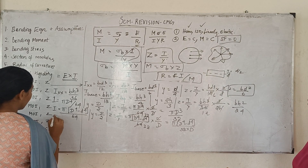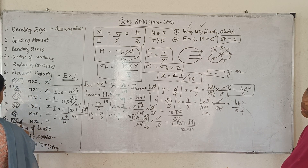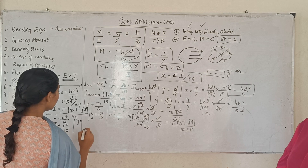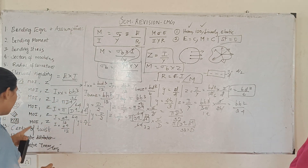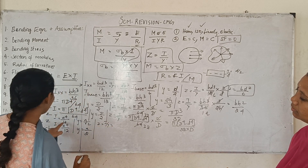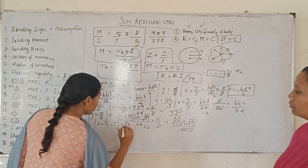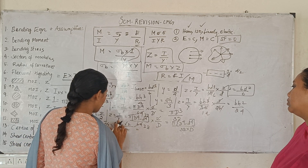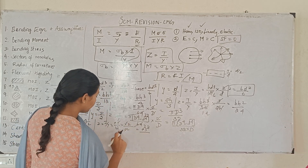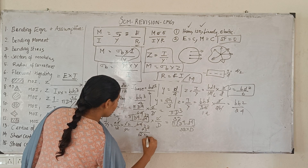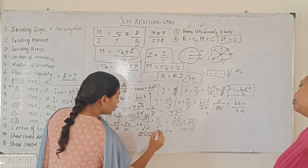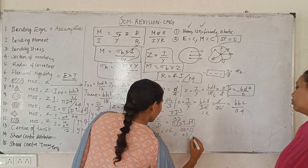Next is square cross-section. For a square with side a: I equals a⁴ divided by 12. Y value equals a/2. Section modulus Z equals a⁴/12 divided by a/2 equals a³ by 6. For a diamond (square rotated 45°): distance y equals a divided by root 2, and section modulus Z equals a³ divided by 6·root 2.